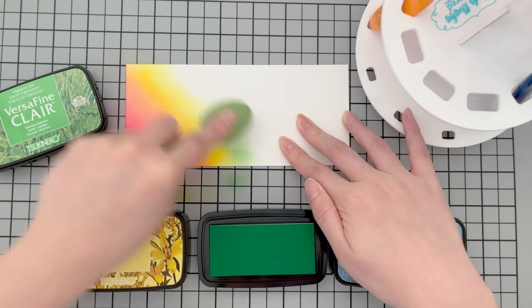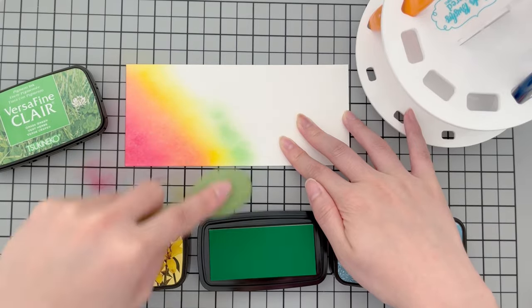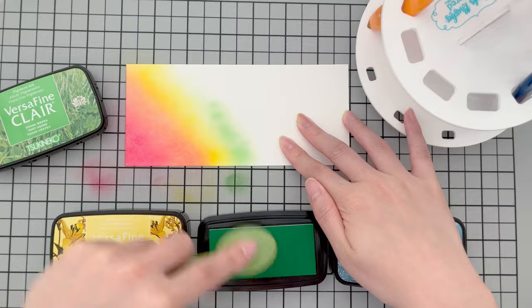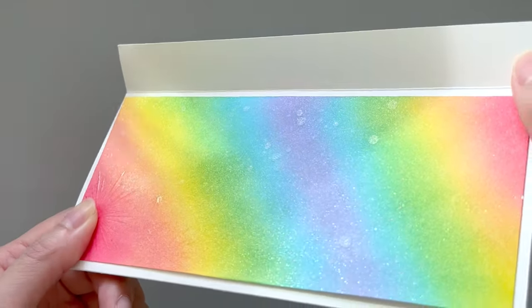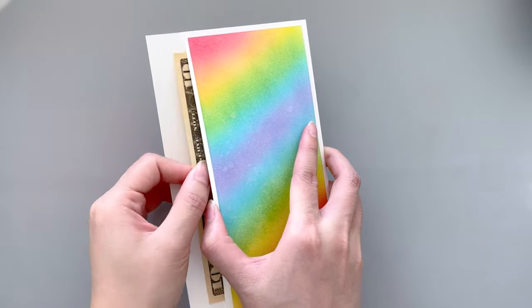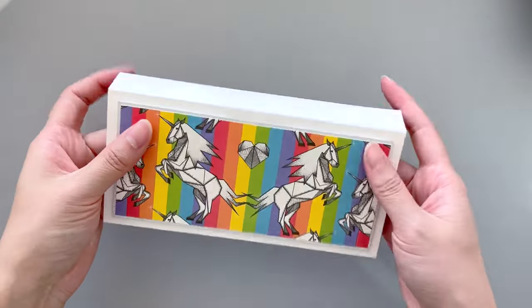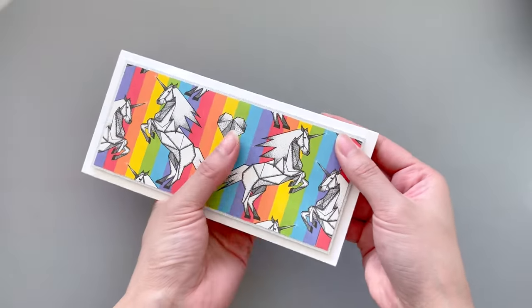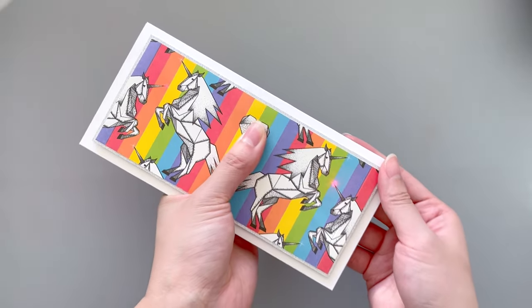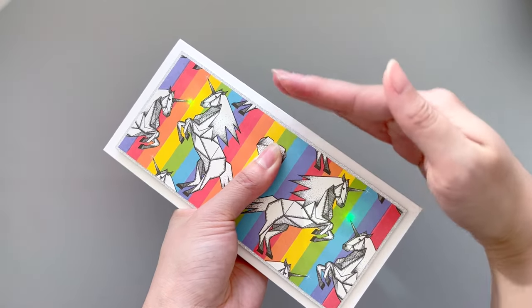If you want to dress up the envelope further, you can also ink blend or stamp additional patterns onto the back of the envelope. And that completes our project today. I hope this inspires you to upcycle any packaging or beautiful paper that you may find. I really had fun creating this money holder and I hope you enjoyed it too. Thank you so much for watching and I'll catch you in my next video.